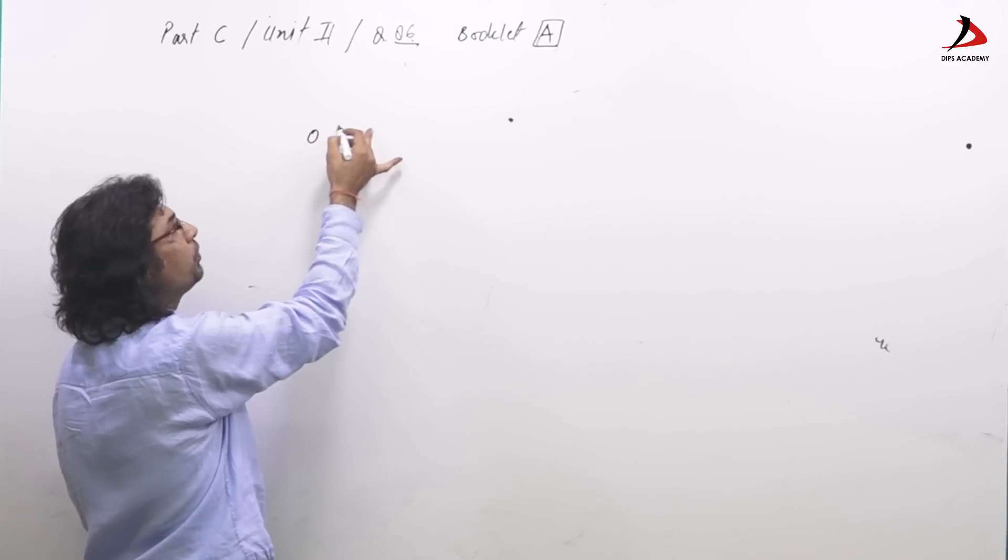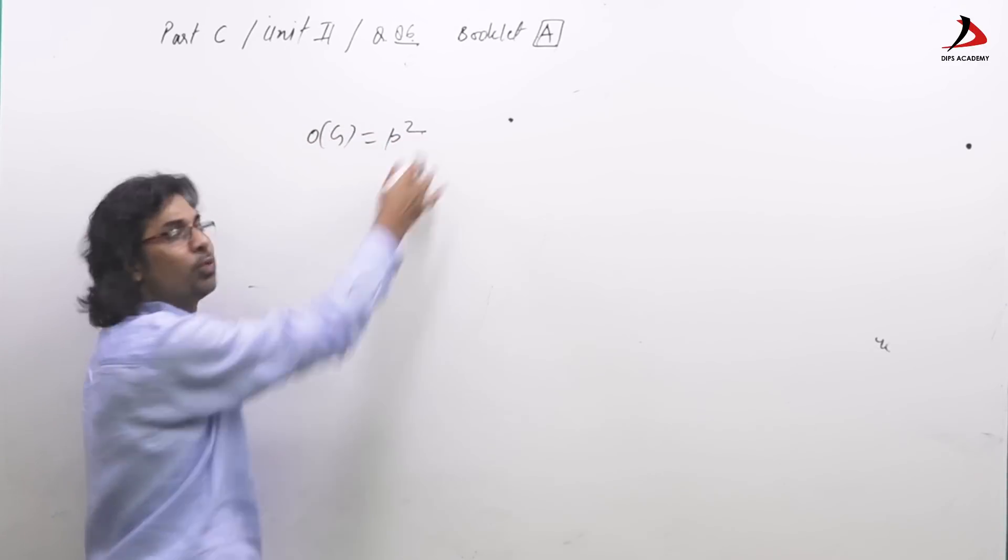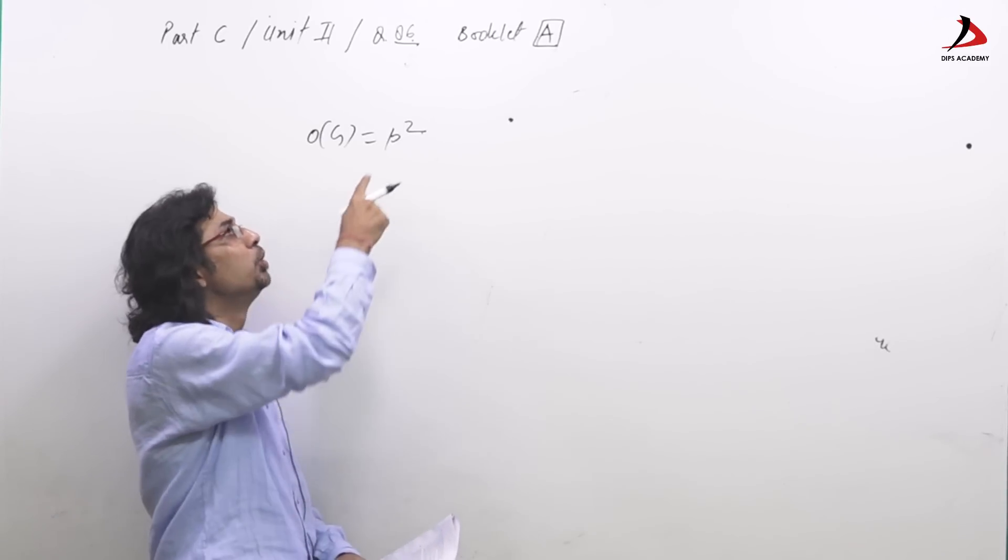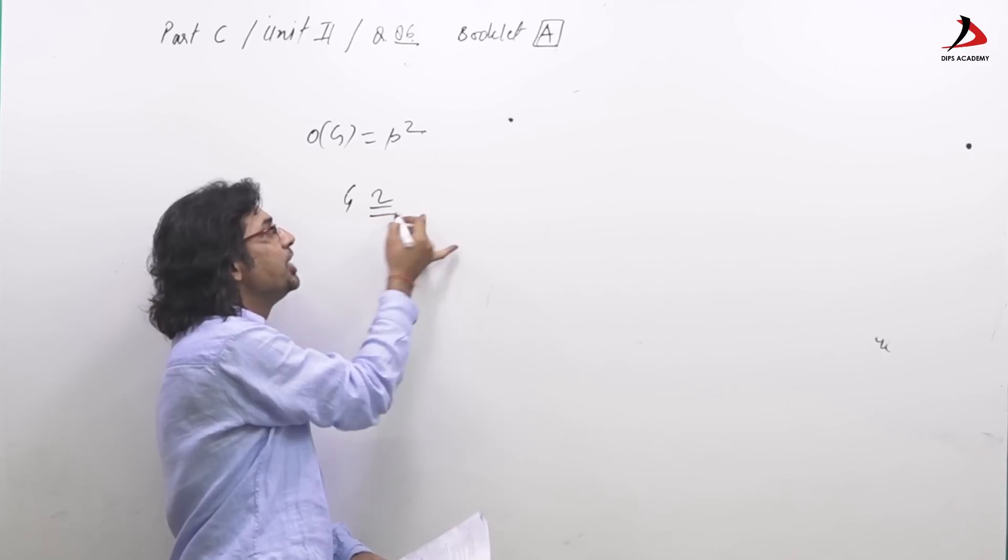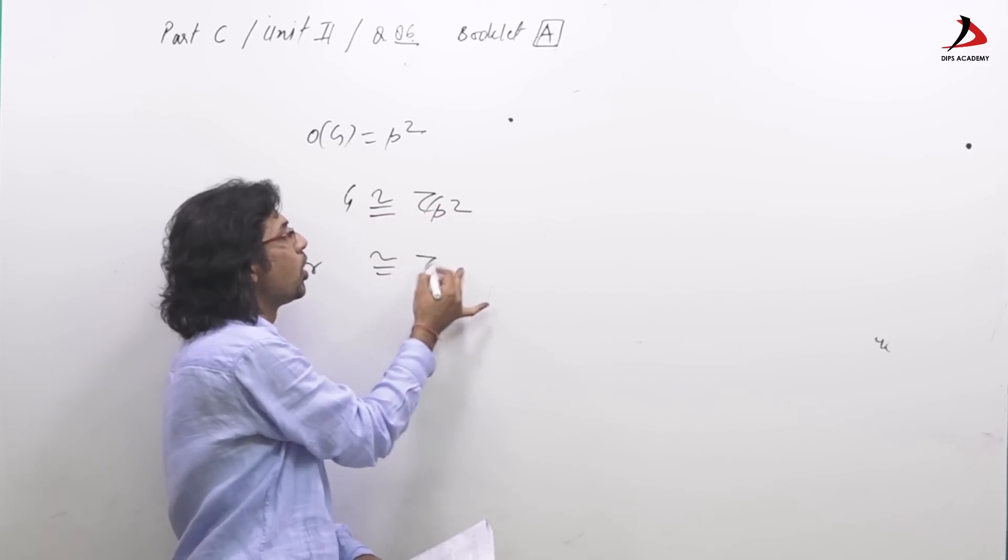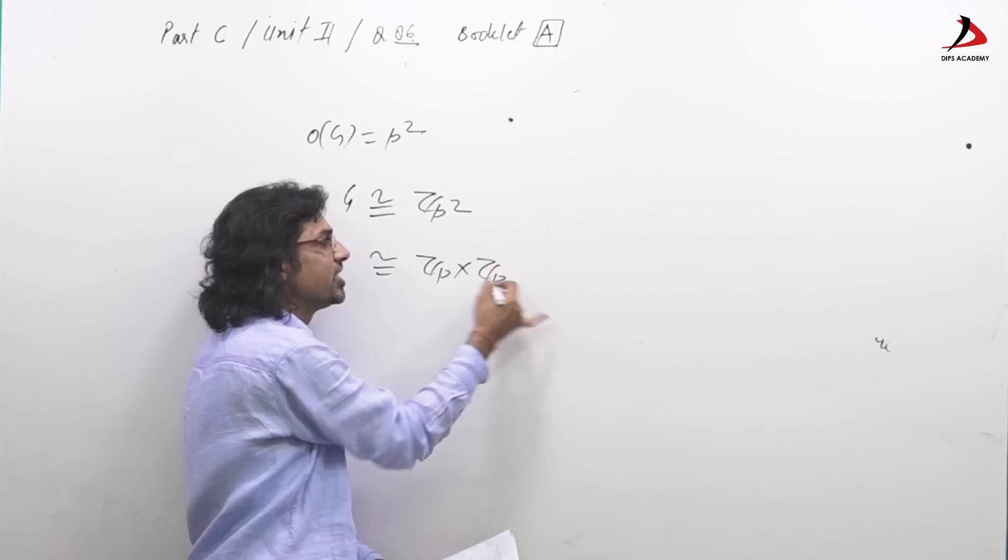See, order of G equal to P square. We know any group order P square is either isomorphic to Z_P square or isomorphic to Z_P cross Z_P.